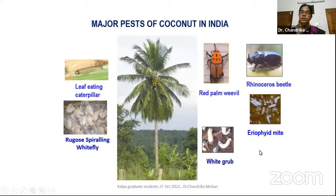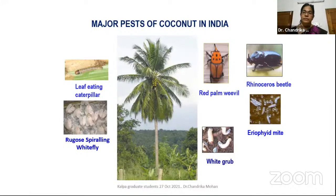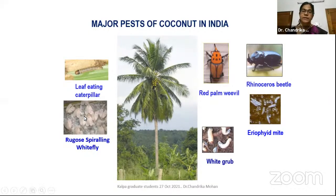Coming to coconut, there are more than 800 species of insects reported from coconut during different periods of its growth. But fortunately, very few are major pests. Only the countable ones — five or six — are major pests: leaf-eating caterpillar, rugose spiraling whitefly, red palm weevil, rhinoceros beetle, eriophyte mite, white grub, and a few minor pests.